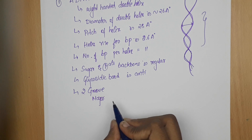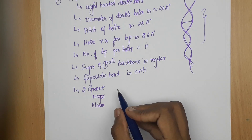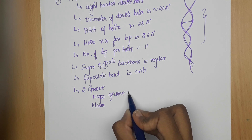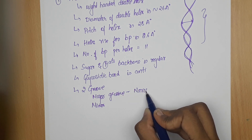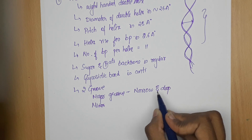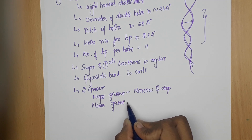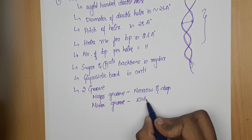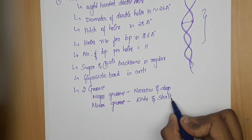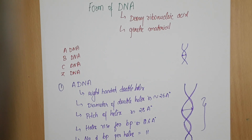A-DNA has two grooves: the major groove is narrow and deep, and the minor groove is wide and shallow. This is all about A-DNA.